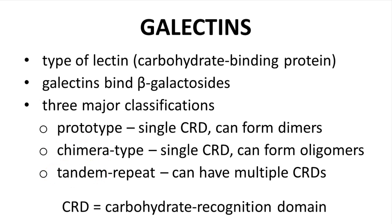Each classification has multiple members except for the Chimera type. The only Galactin in the Chimera type is Galactin-3. So even though Galactins are a family of proteins, Galactin-3 is an outlier by being the only member of the Chimera type. So achieving selectivity for Galactin-3 over the other Galactins may be more feasible than expected.